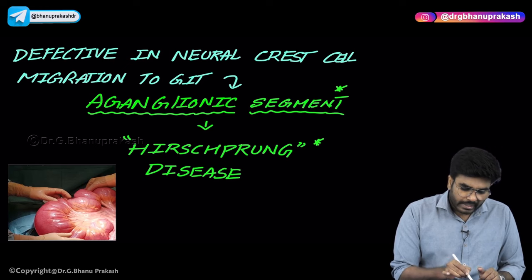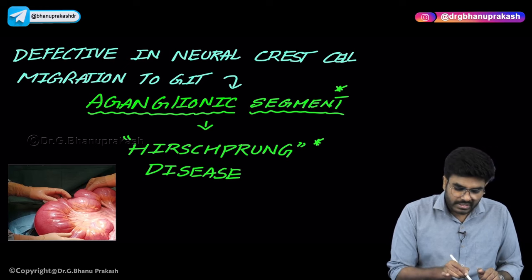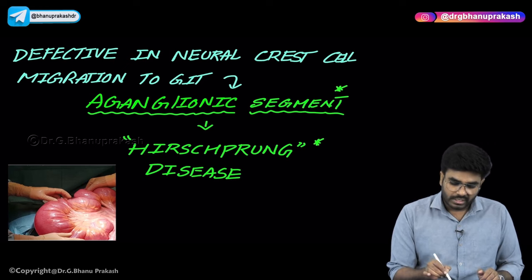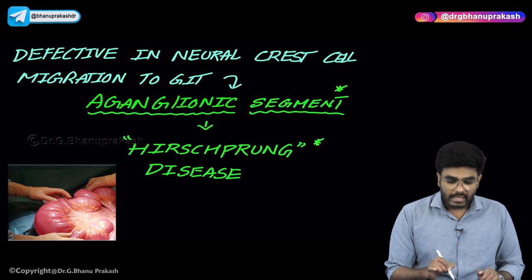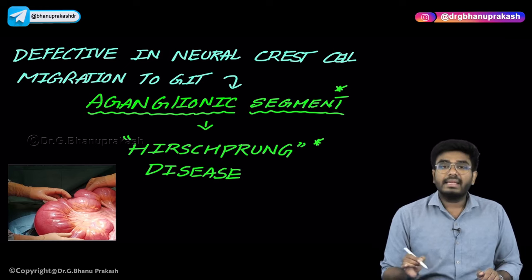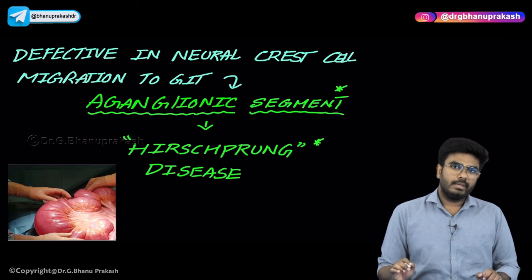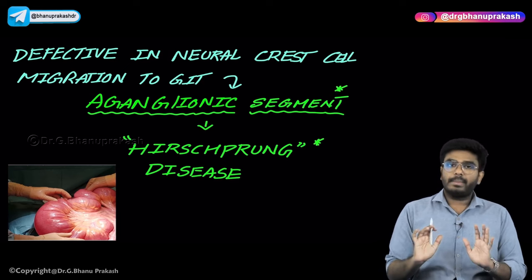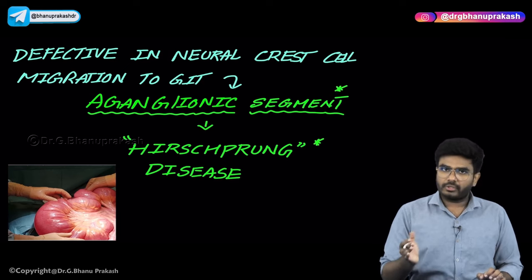Why did all this problem come? It is because of defective neural crest cell migration to the GIT, leading to a segment called the aganglionic segment. Whenever there is an aganglionic segment, that disease is called Hirschsprung disease.